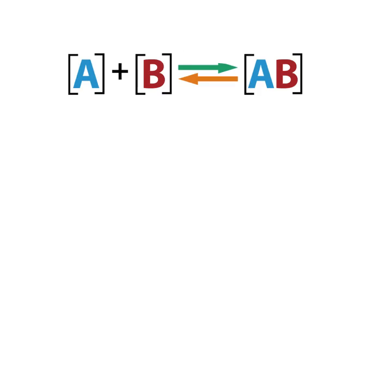It also depends on the concentrations of them. The more copies of A that there are, the more copies of B that there are, the more likely A is to run into B. So even if they don't really like each other that much, if you run into each other over and over, there's a high probability that you're just going to bind by chance.